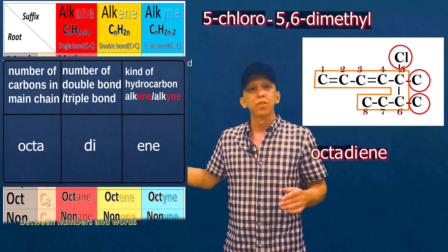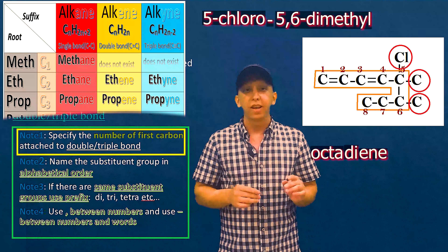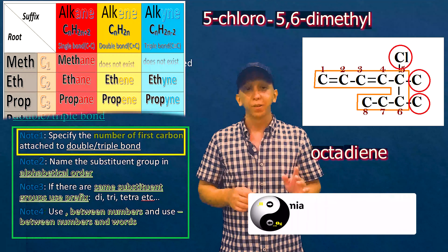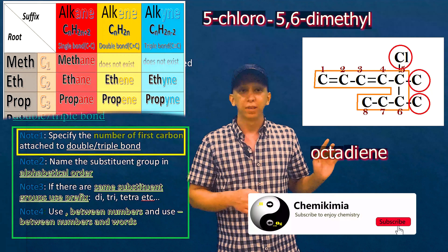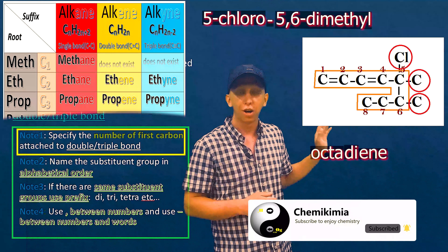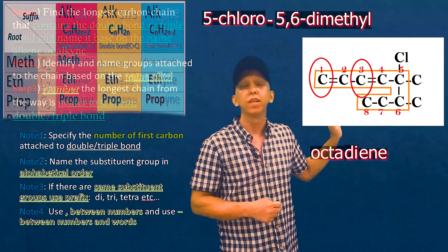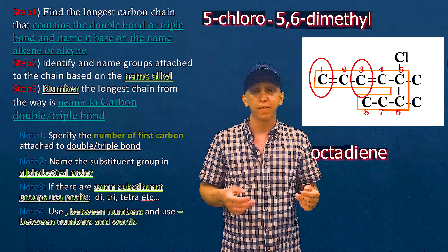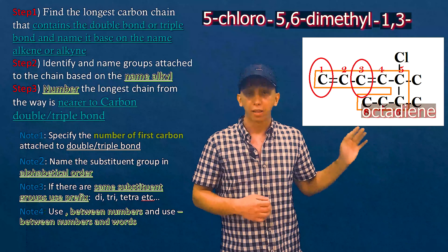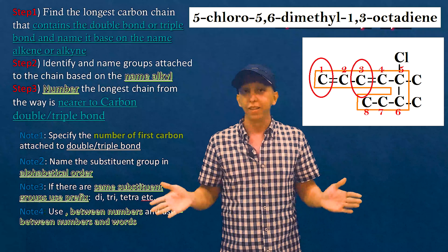Now we write the name of our main chain. We have to write the number of the first carbon attached to each double bond. The first carbons attached to the double bonds are carbon number one and carbon number three. So we write 1,3-octadiene. The full name of our structure is 5-chloro-5,6-dimethyl-1,3-octadiene.